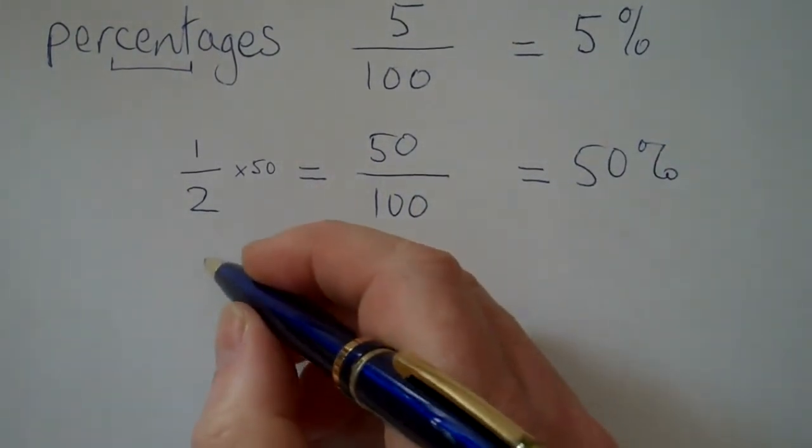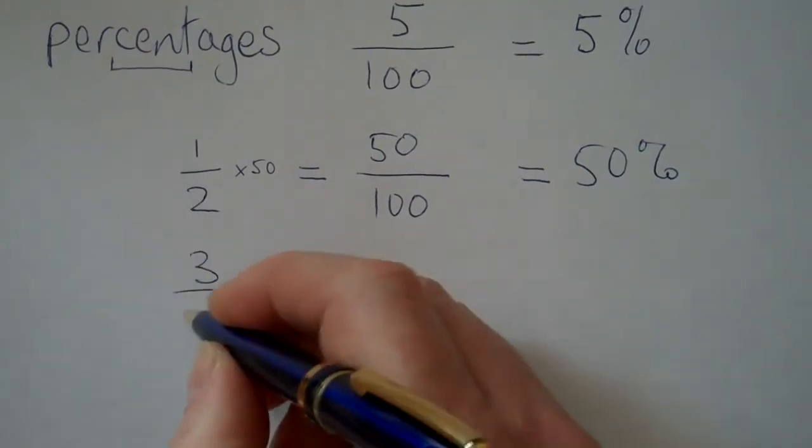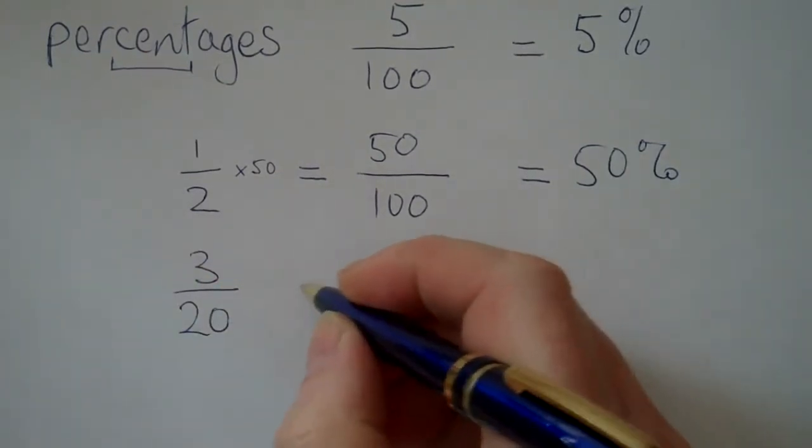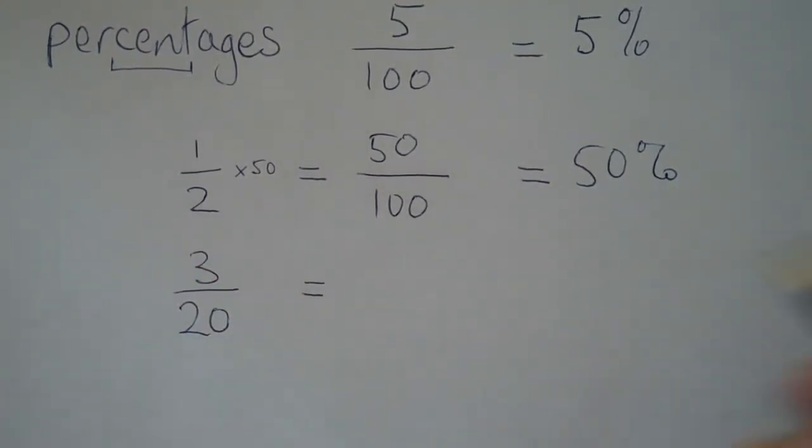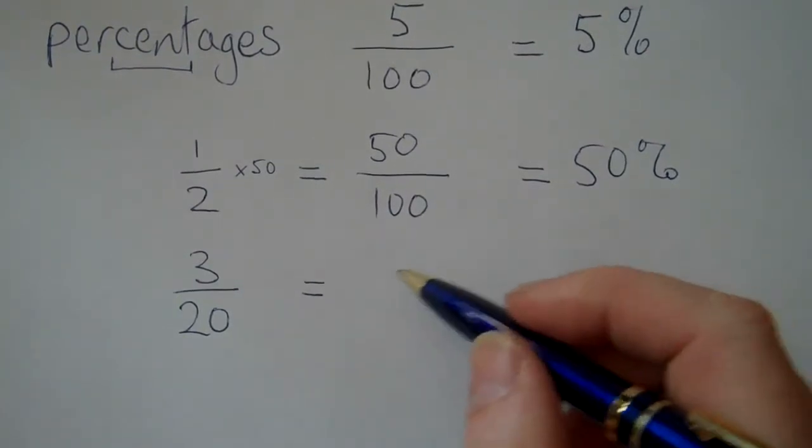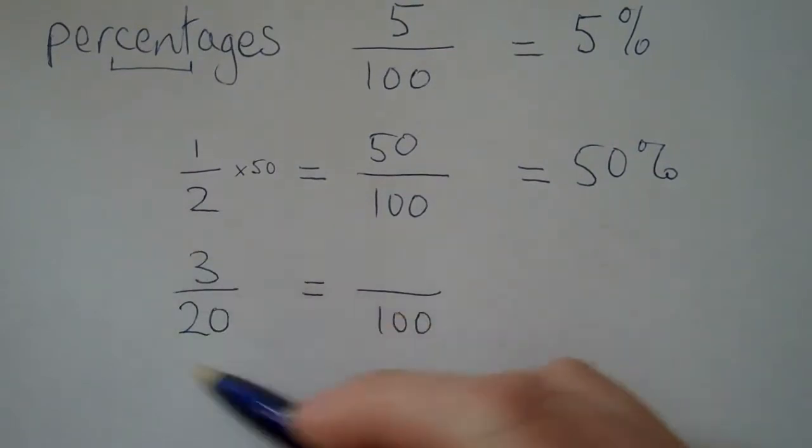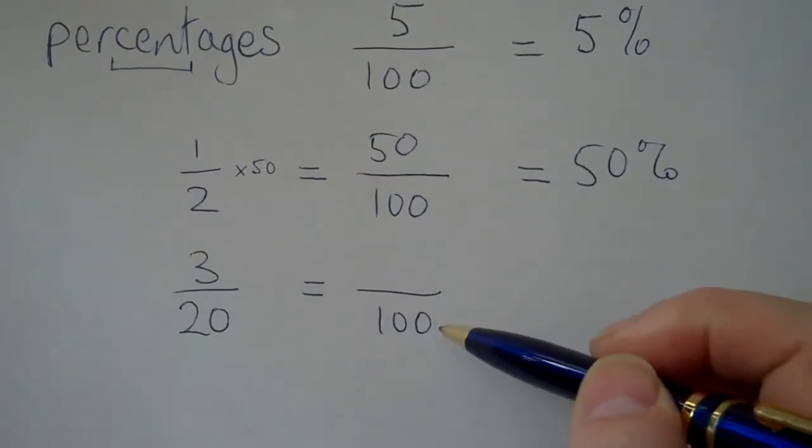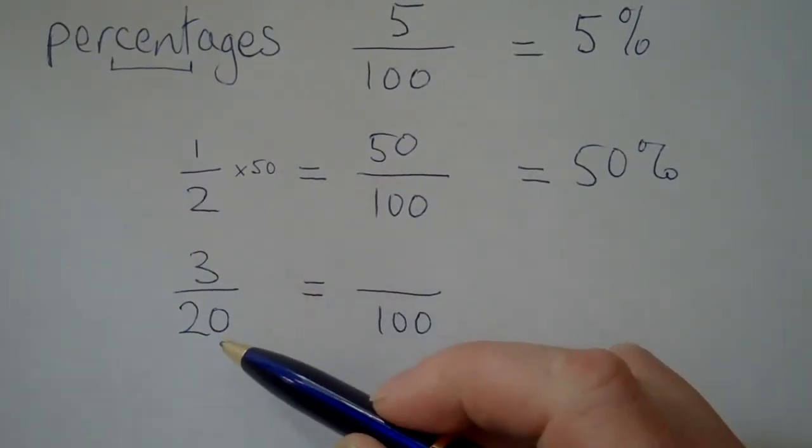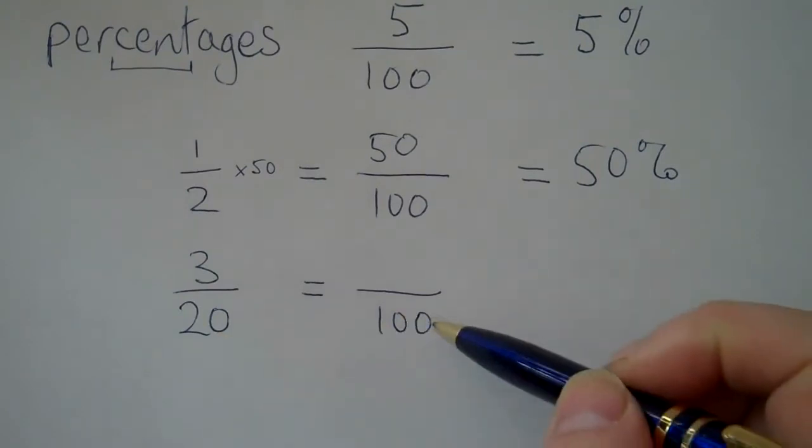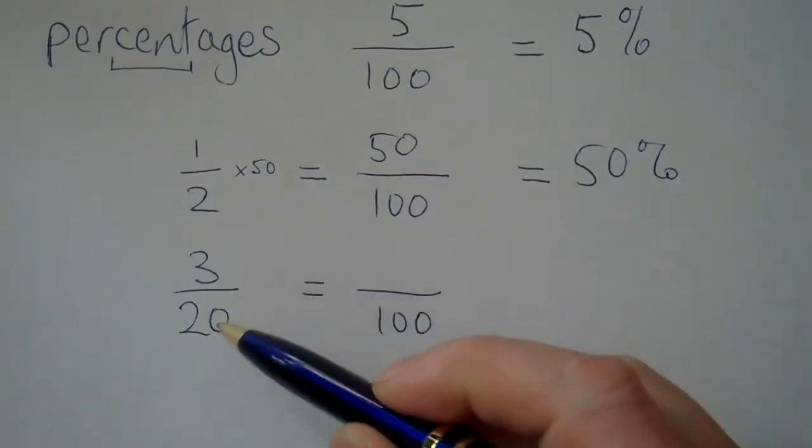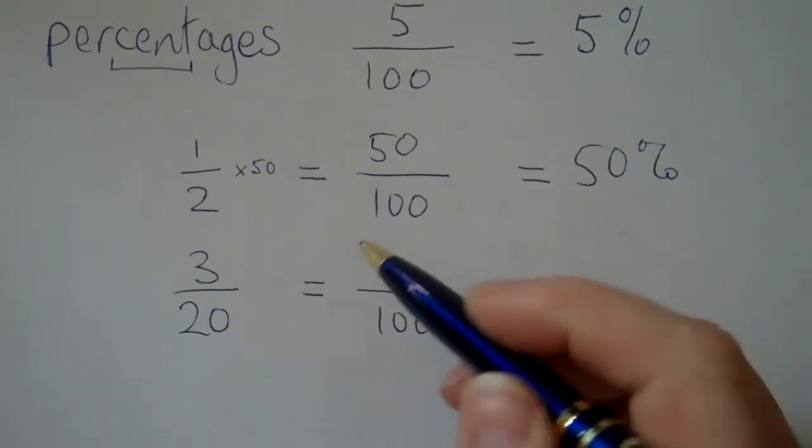Let's take a different example. Suppose we had three out of twenty people knew how to juggle. What's that as a percentage? Well again, we've got to find the number that's the equivalent fraction that goes over a hundred.